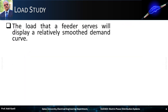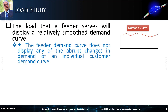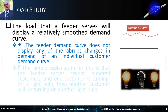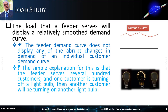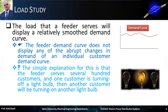It is worth noting that in most cases, the load that the distribution feeder serves will usually display a relatively smoothed demand curve. So the feeder demand curve usually does not display any of the abrupt changes in demand of an individual customer's demand curve. The simple explanation for this is that the feeder serves several hundred customers, and when one customer is turning off a light bulb, then another customer may be turning on another light bulb. Therefore, the main distribution feeder will not experience any significant change in the load.